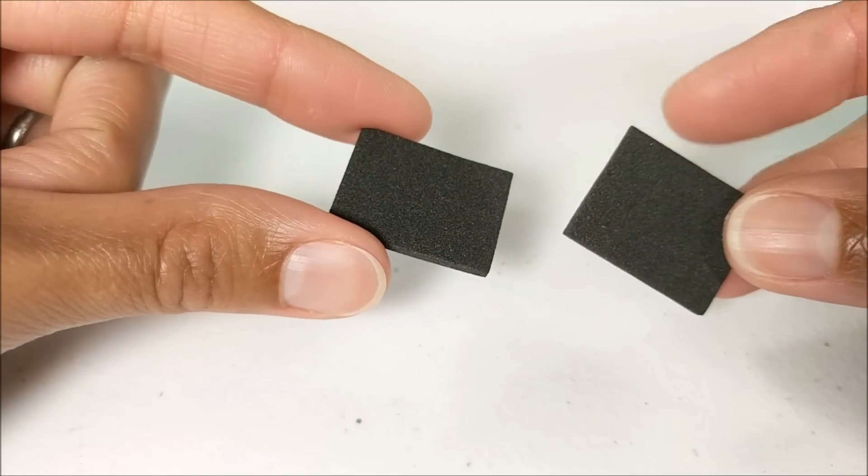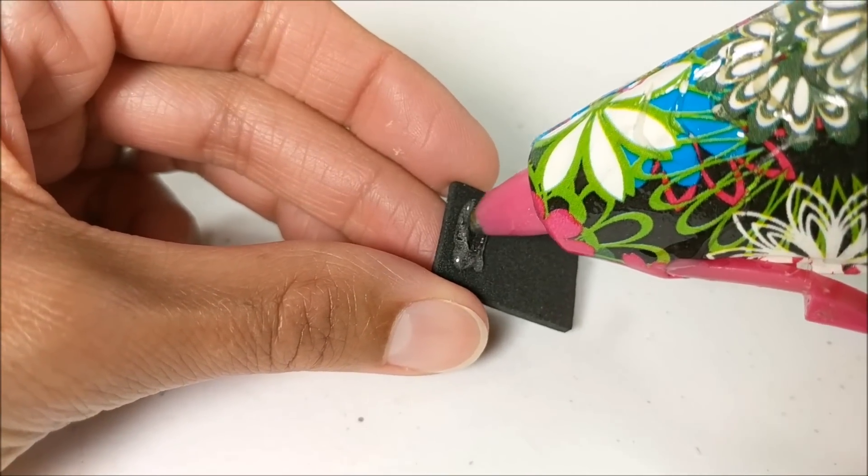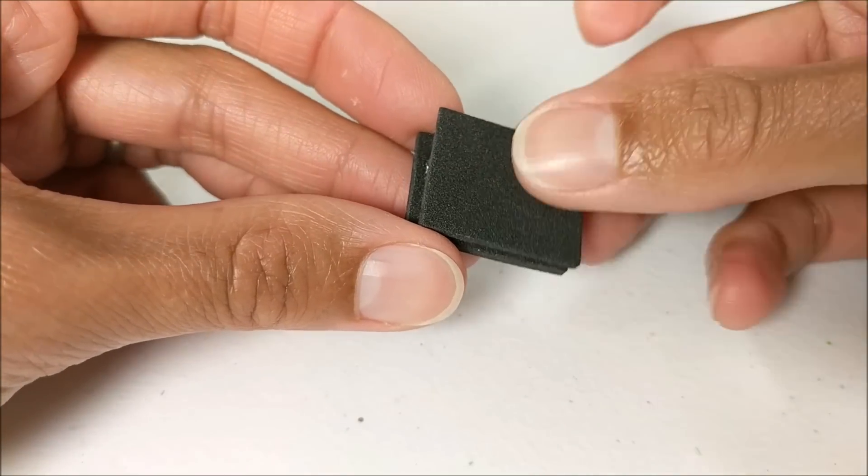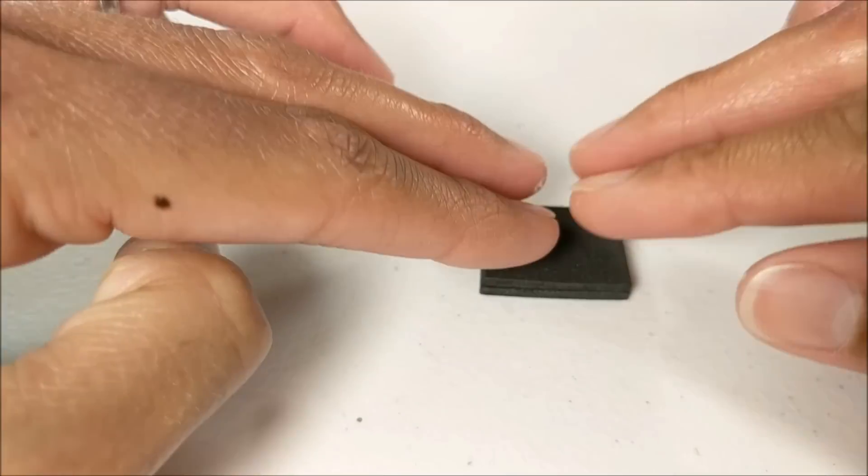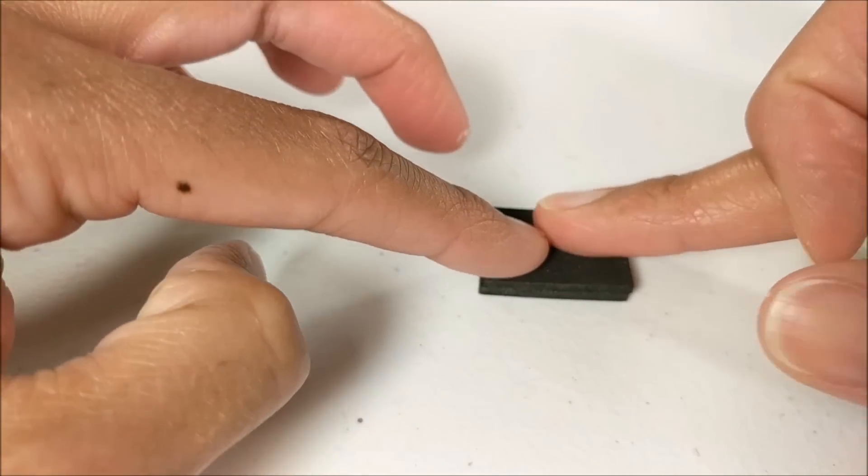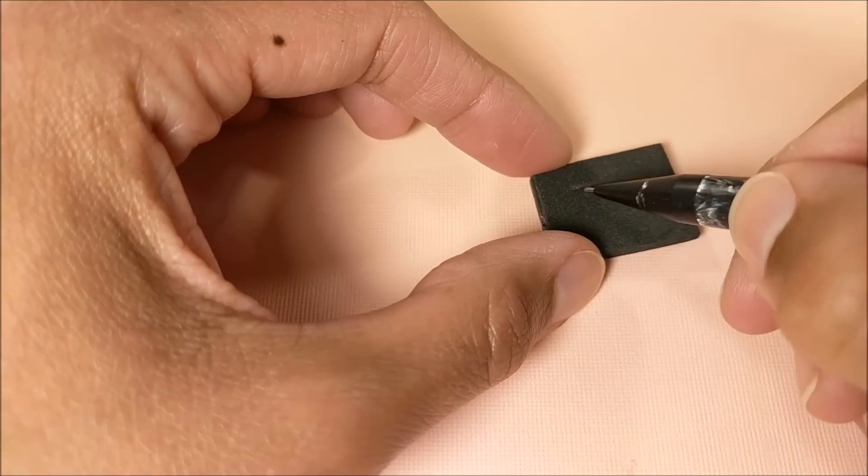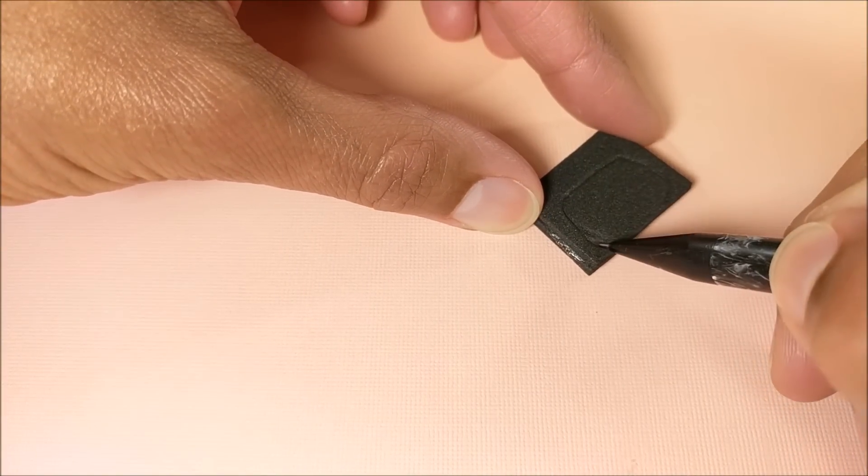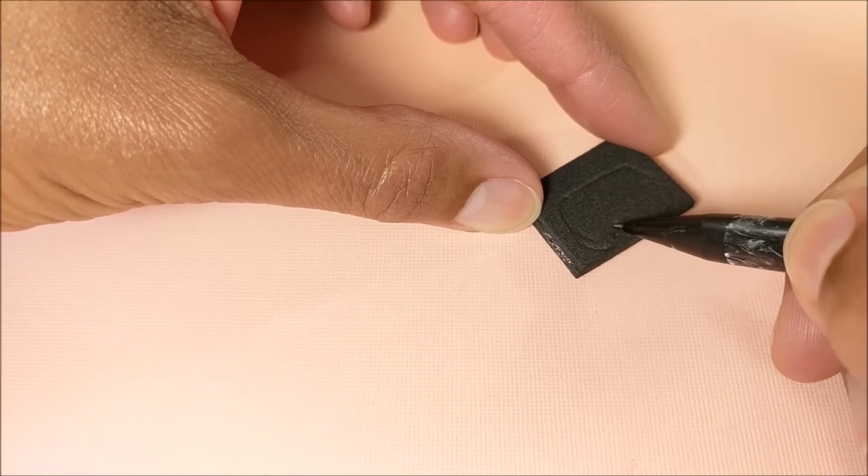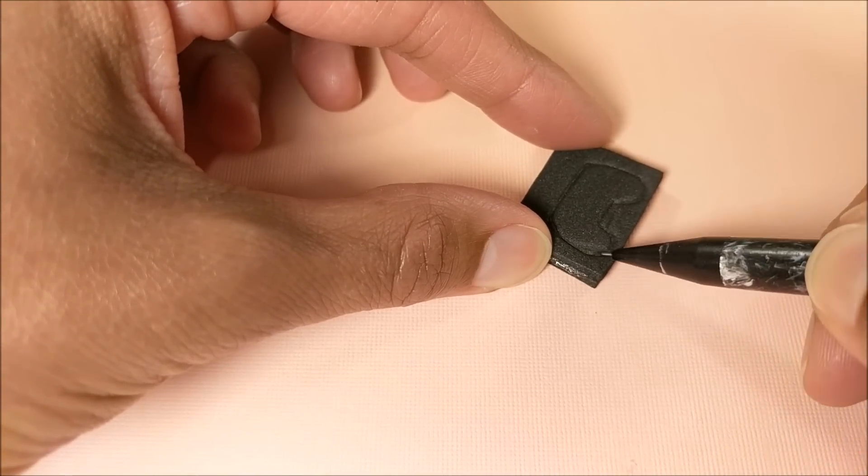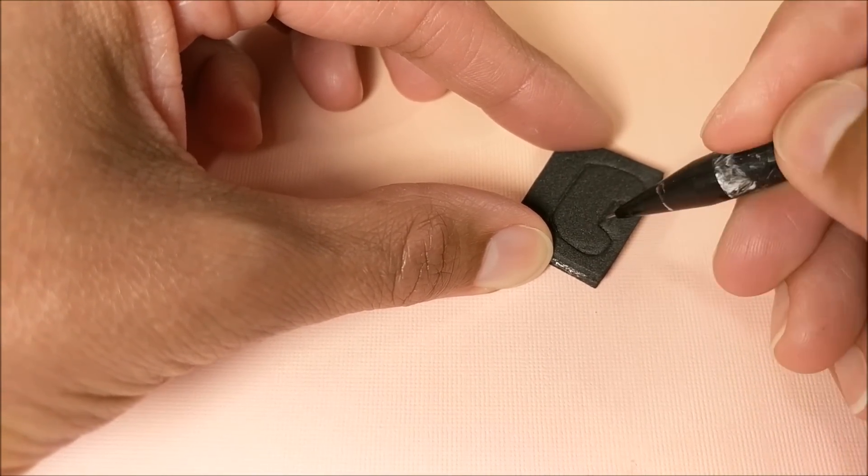For the controller, just glue two pieces of craft foam together. And using a mechanical pencil, no lead, I create the shape for my controller. And you don't want to press so hard that you rip the craft foam, but you do want to press hard enough to make it easier to cut.